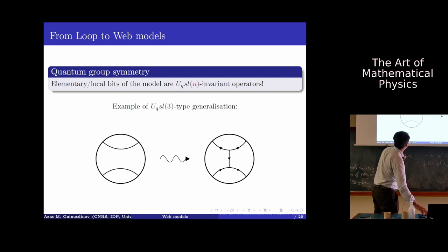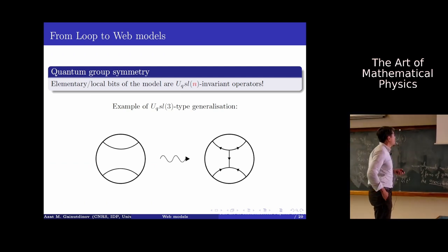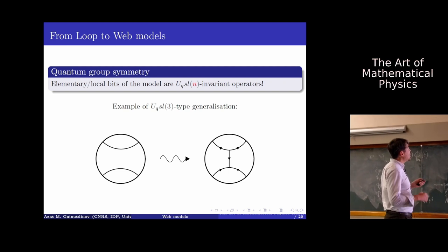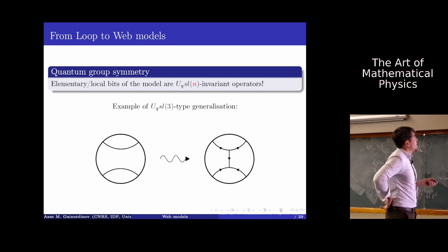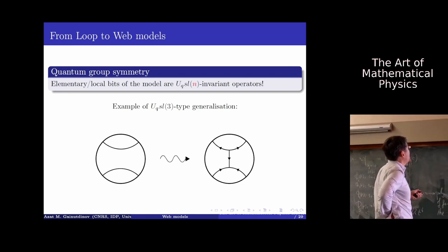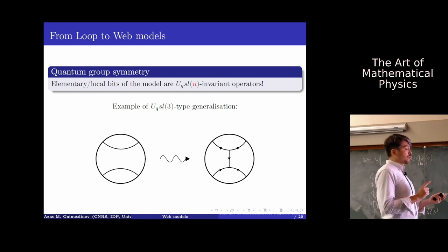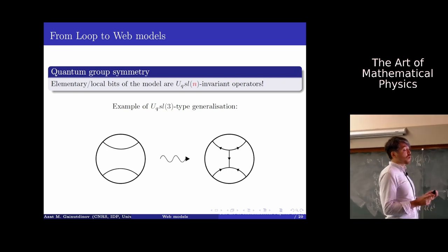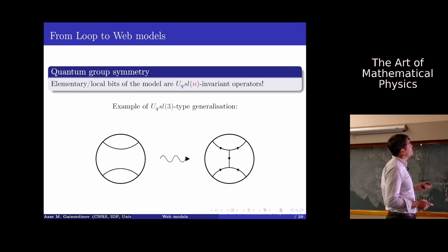The models I'm going to talk about will also have a local formulation, and the local pieces of the model will be U_q(SL_N) invariant operators. This is an example for U_q(SL3). Instead of just an edge of a loop, we will have oriented edges. The orientation comes from the fact that the fundamental and dual-to-fundamental representations are not isomorphic — some arrows point up (fundamental) and some point down (anti-fundamental).